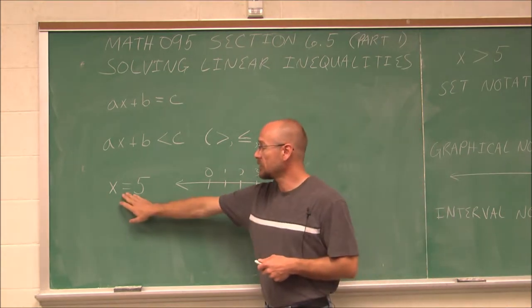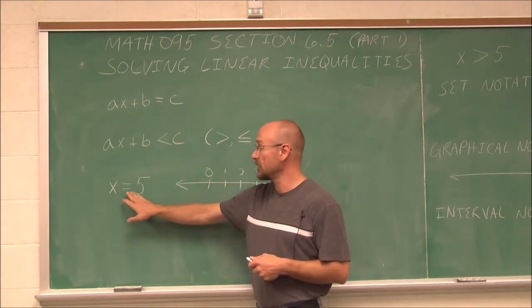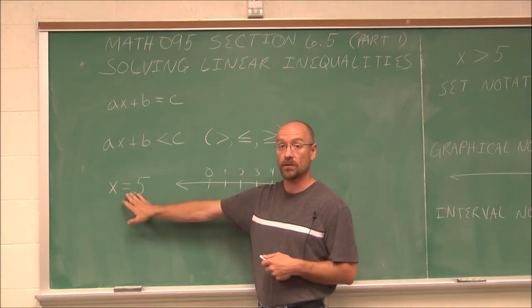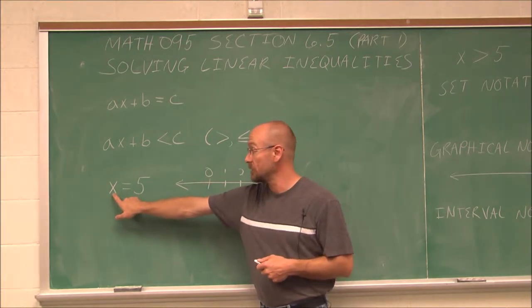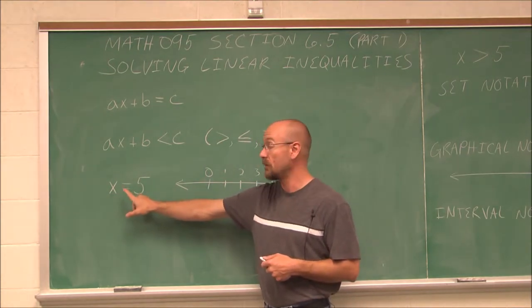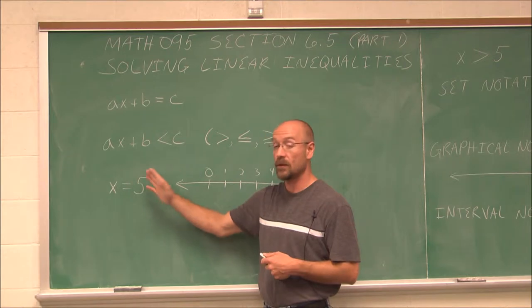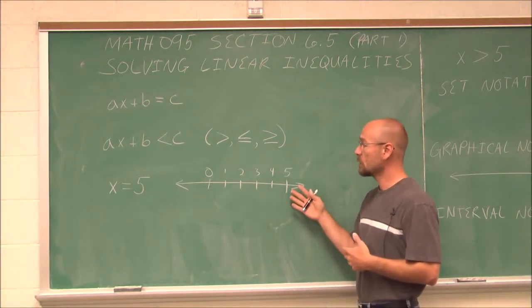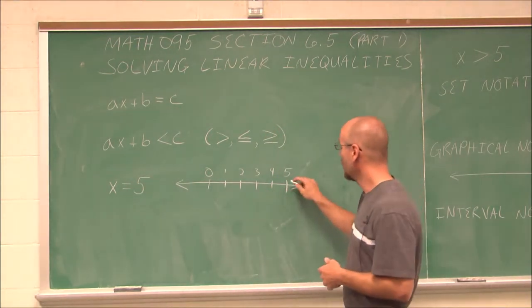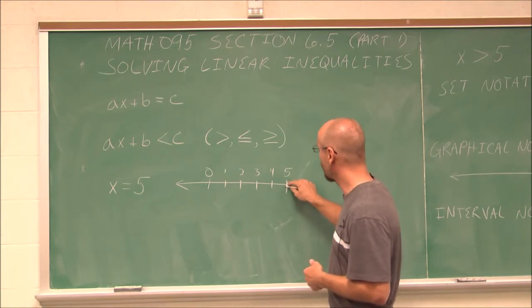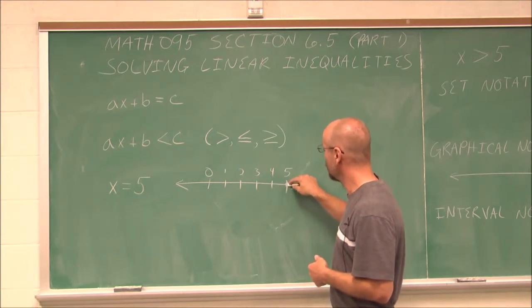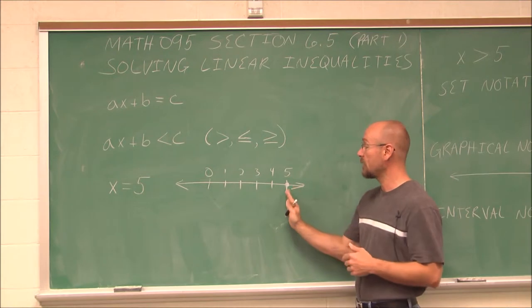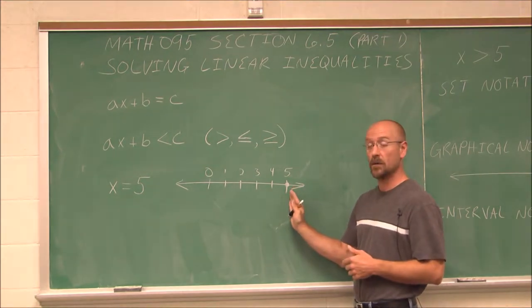This here is an equation: x equals 5. There's only one statement that will make this true, and that's if x is the value 5. 5 equals 5 is the only true statement. If we were to graph that on a number line, we could use a closed dot, because this is a point — a single value on the number line.